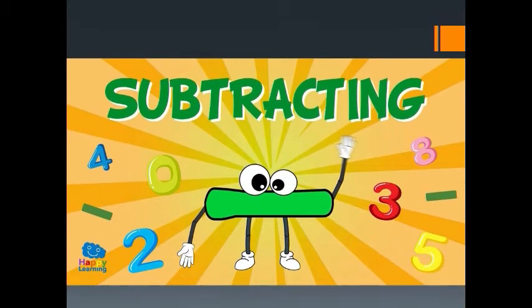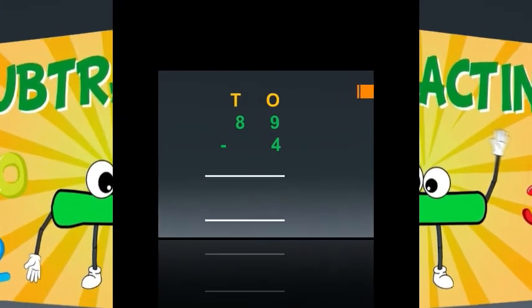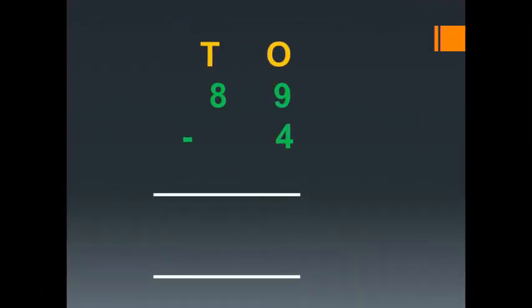Now we are going to subtract using ones and tens. The numbers are 89 minus 4. Like addition, here also we have to start from subtracting the ones place. In the ones place, the numbers are 9 minus 4.